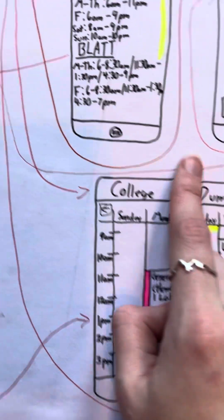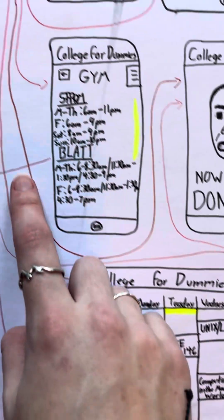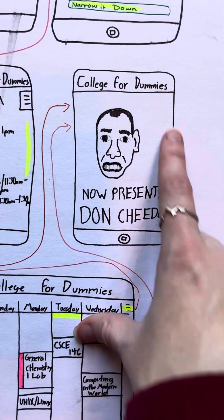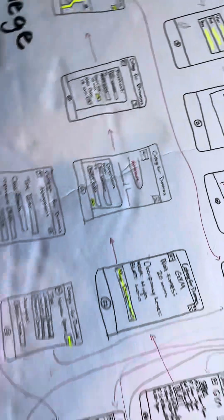And we can go back here and go to Don Chido. And you can then see this beautiful man. And yeah, that's our College for Dummies.